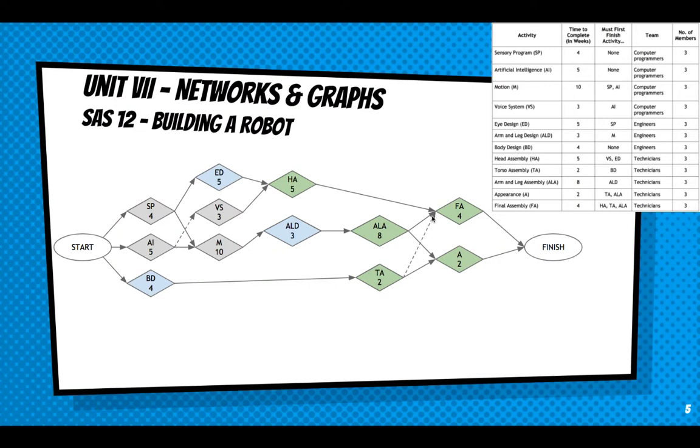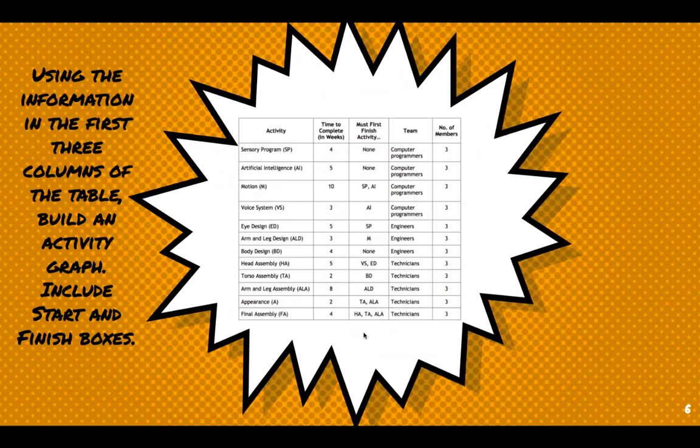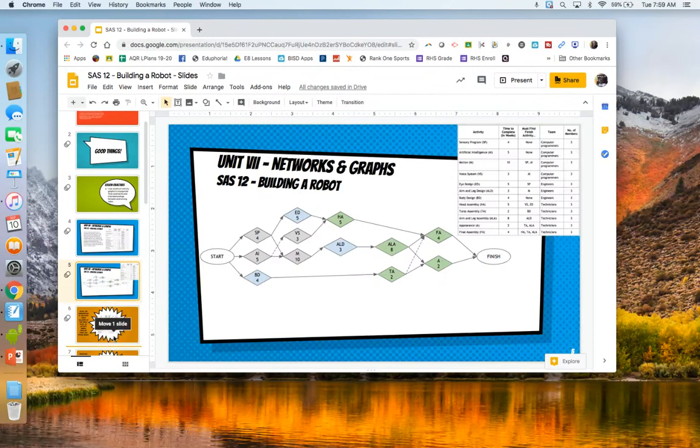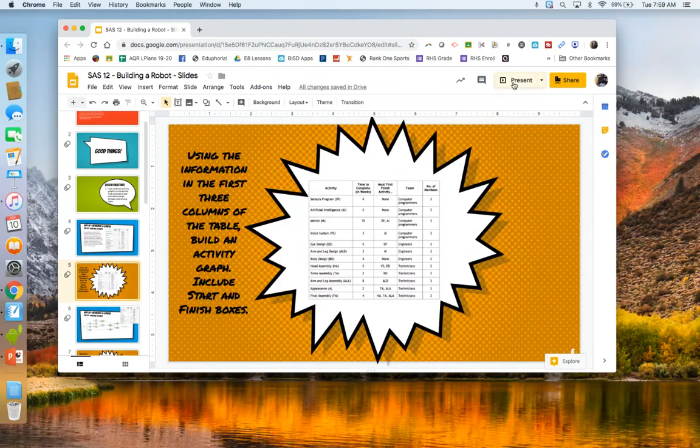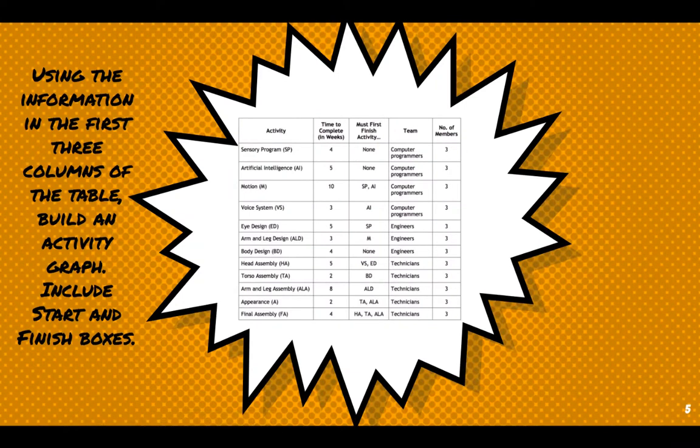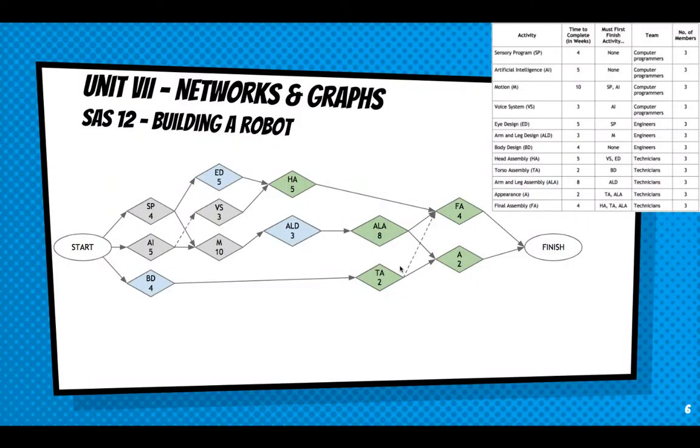So notice that some of the arrows are dotted. The only reason I dotted those lines, they still are activities that have to be done before another activity. It's only because they crossed another line. You don't do task assembly and then to appearance because there's already a line going there. It's just crossing over the arm and leg assembly to appearance. And so I want to make sure that we know that that's still there. All right. So using the information in the first three columns of the table, build an activity graph, include start and finish boxes. So now that I've built this activity graph, what I've done is I've put it in the wrong spot. So I'm going to move it to the slide that it needs to be.